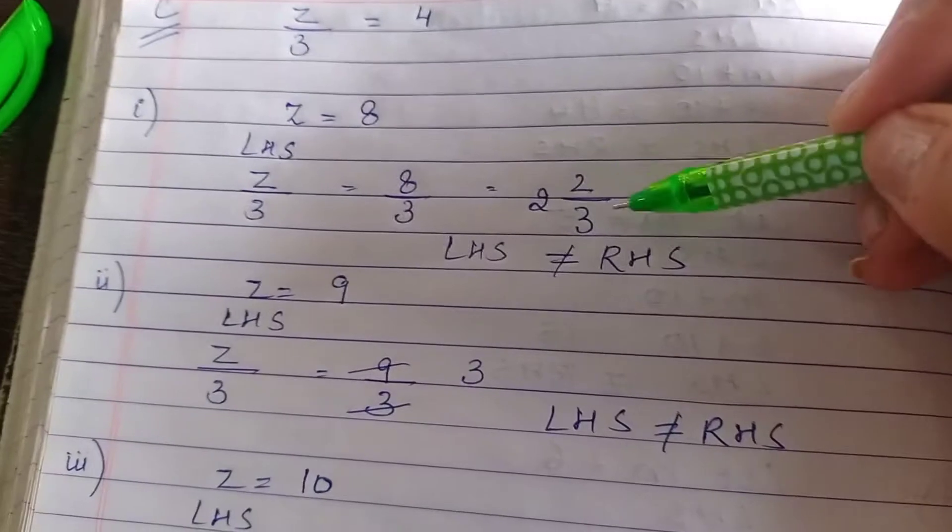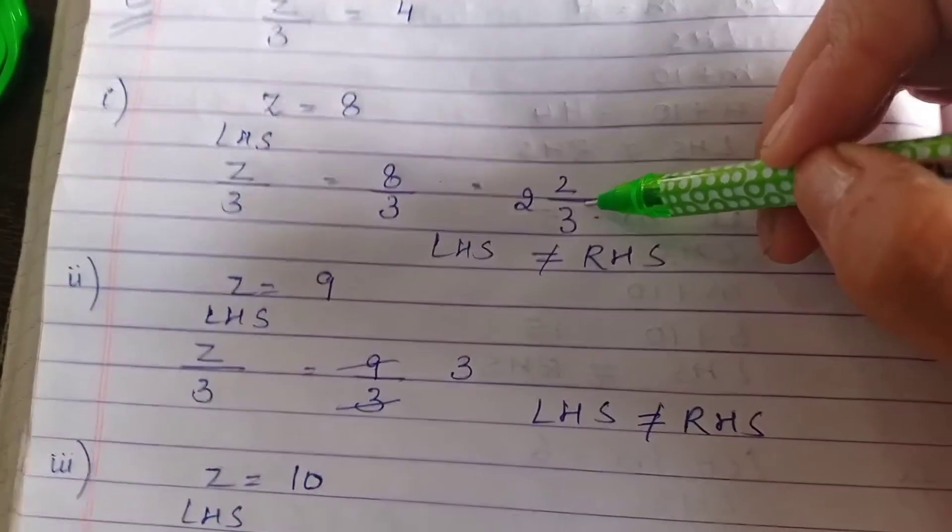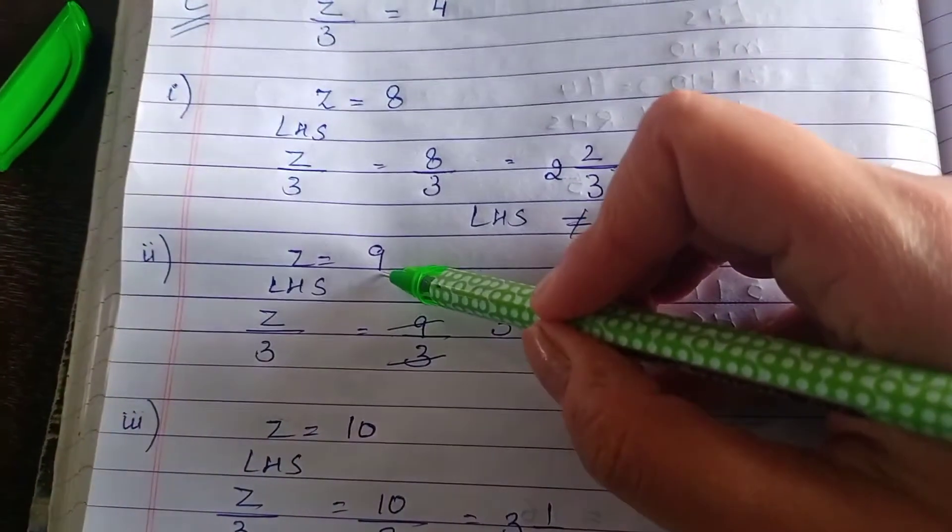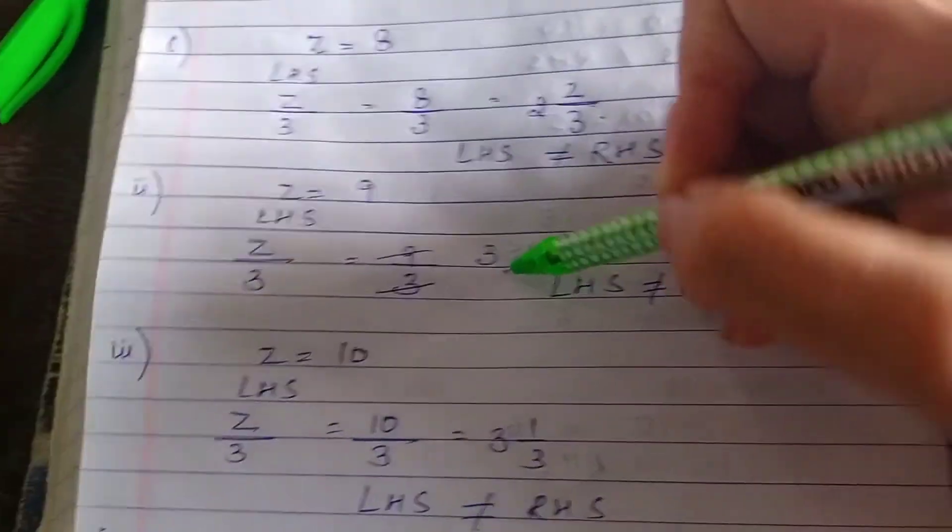Improper fraction means we have to convert it into mixed form. This is already done in the book. Second time, we keep z as 9. 9 divided by 3 is 3. Again, it is not equal to RHS because RHS is 4.